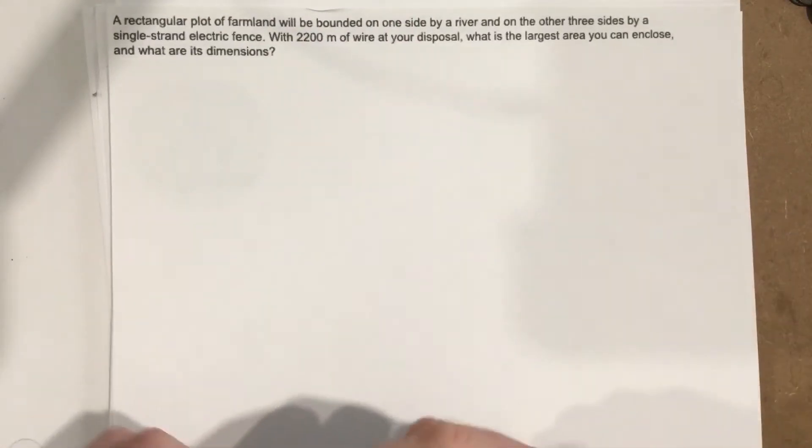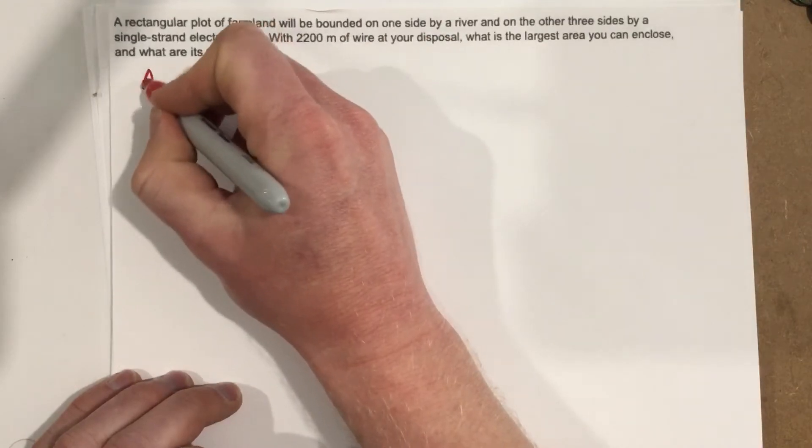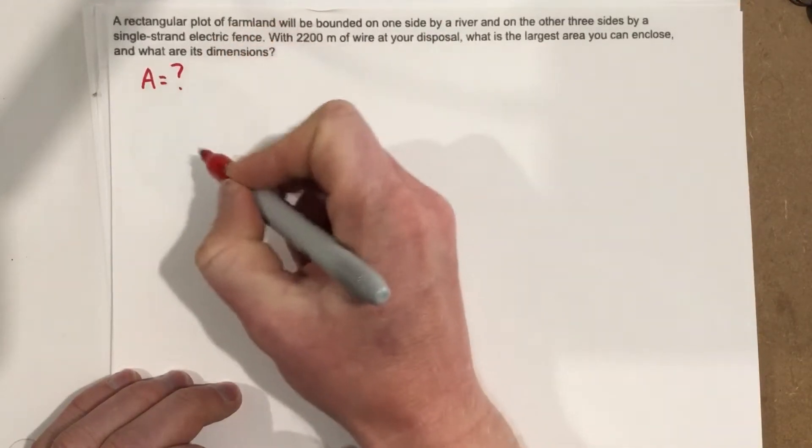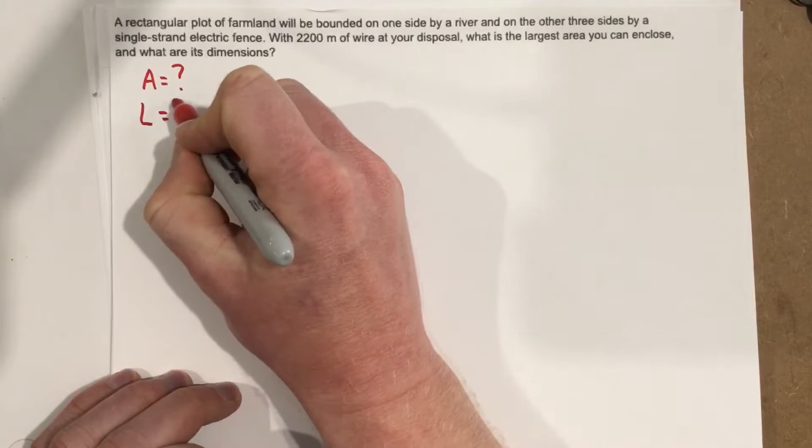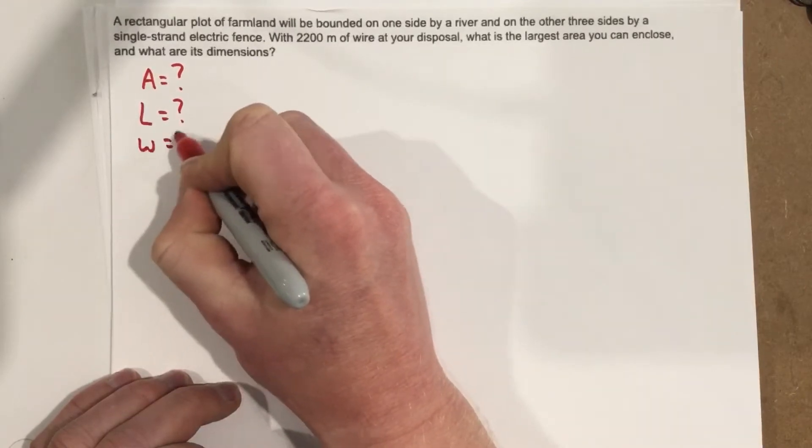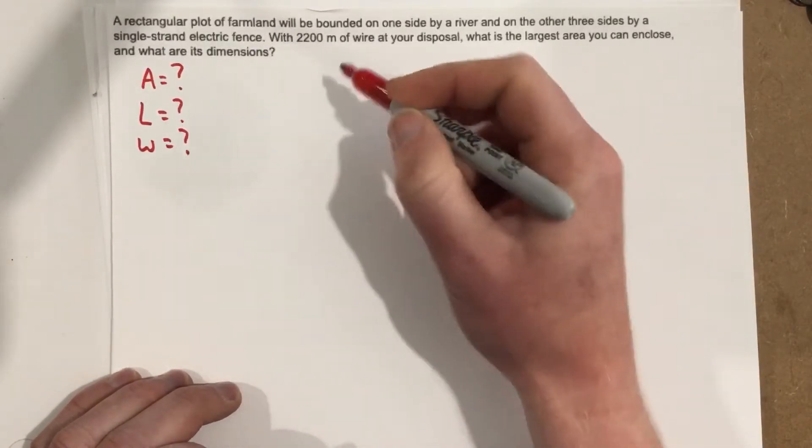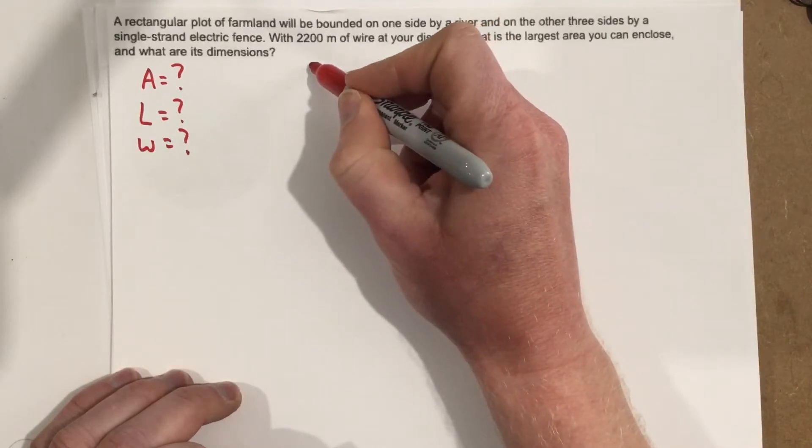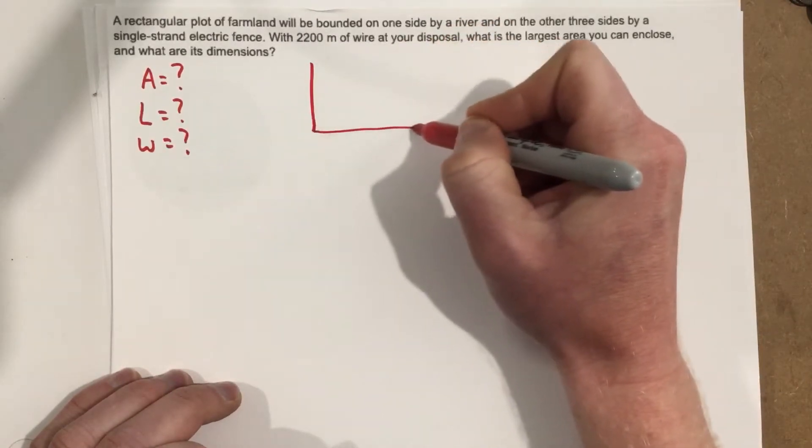So we're looking for the area, we're looking for the length and the width. We're looking for the area, length, and width for a rectangular piece of farmland.